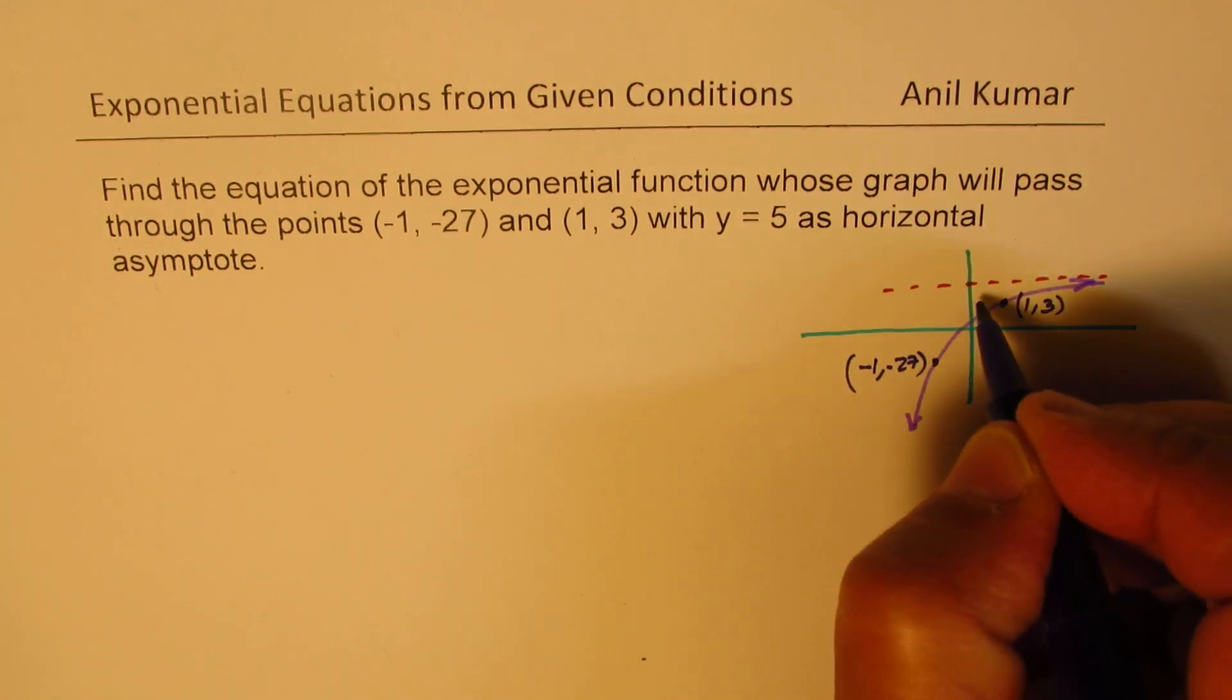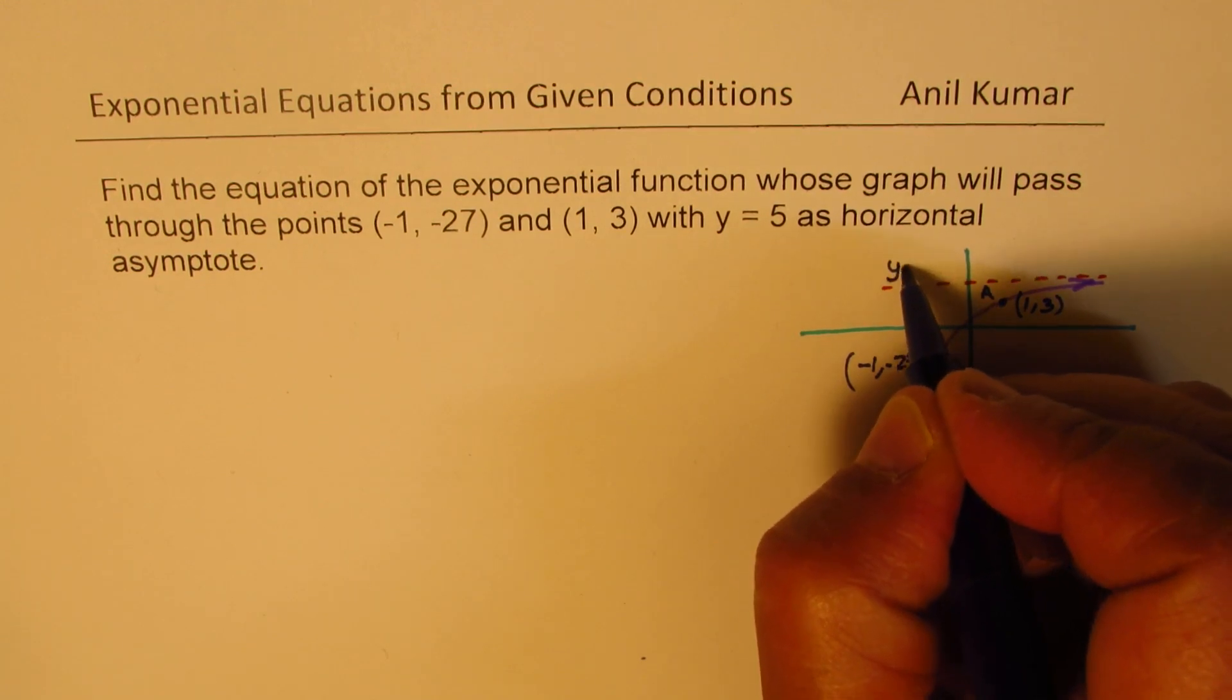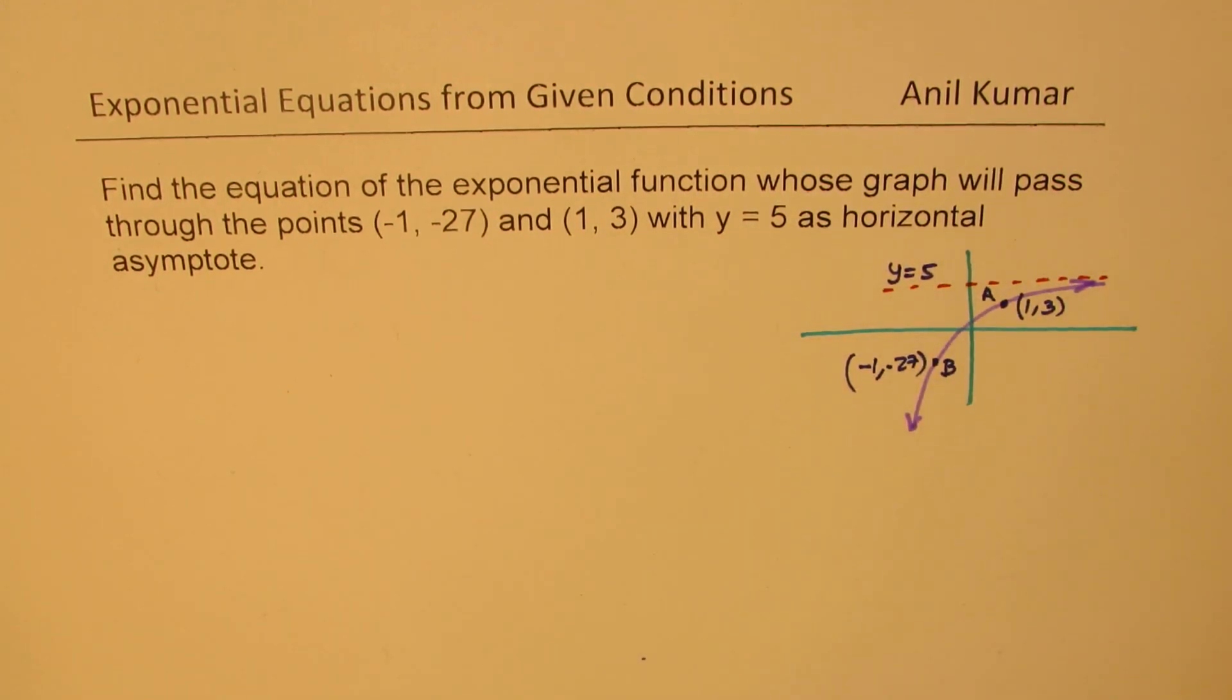Let's call these points A and B. We also know that y equals 5 is horizontal asymptote. Now let's see how to find the equation of this graph.